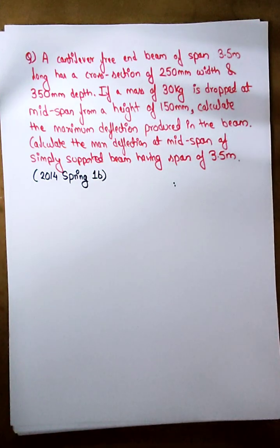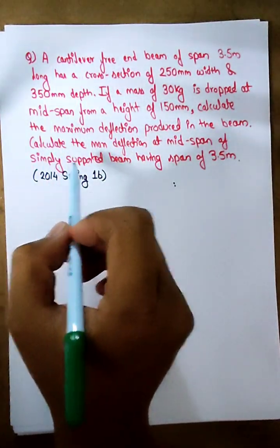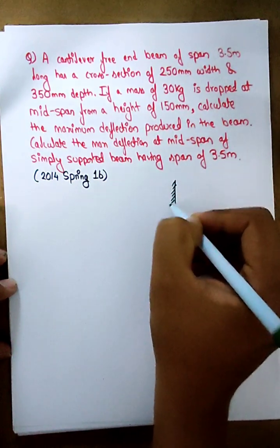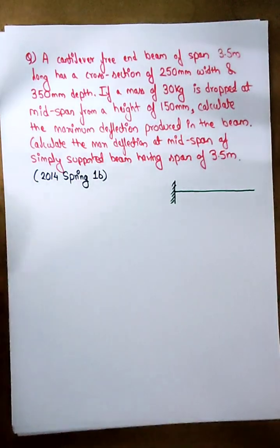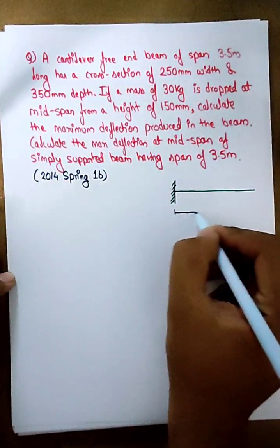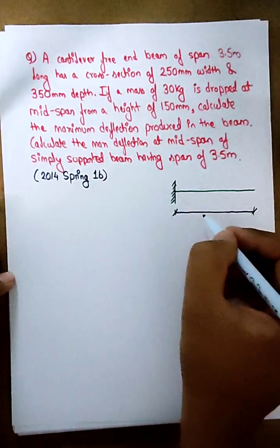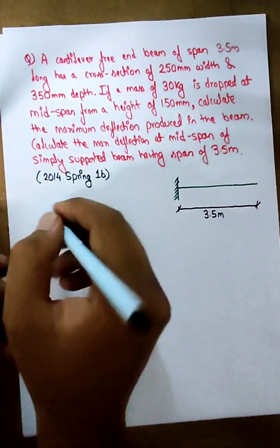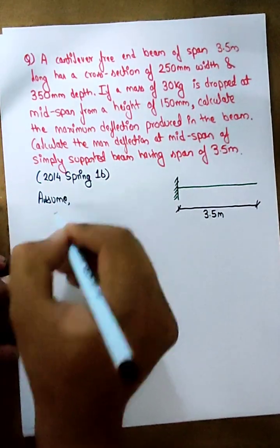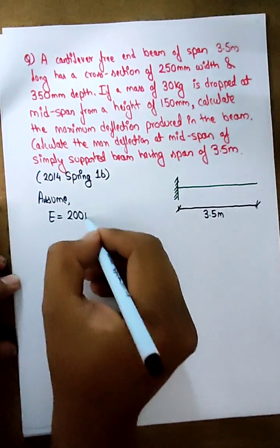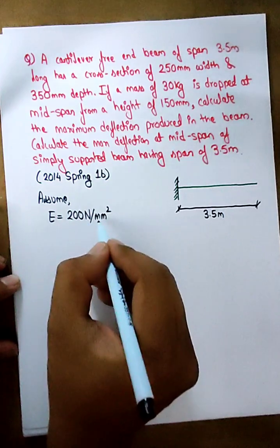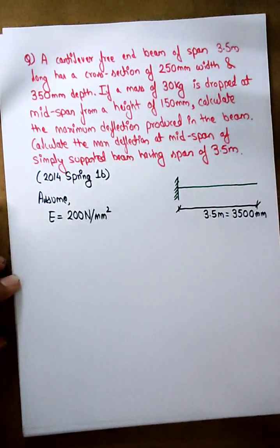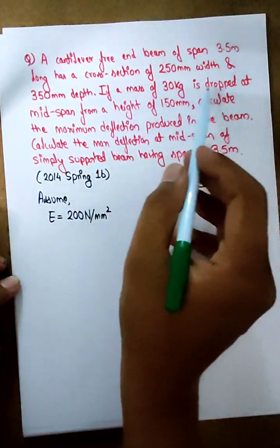In this question, the first part is a cantilever beam. The length is 3.5 meters. The cross-section has a depth of around 350 mm.